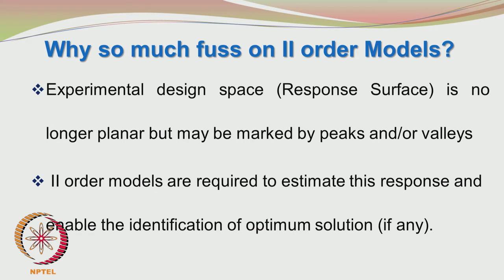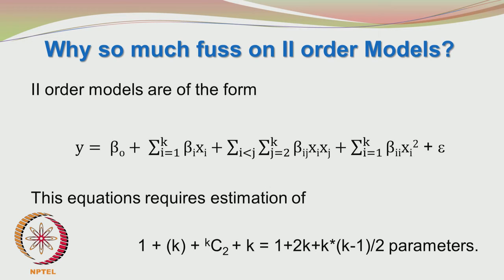Second order models receive much attention because the experimental design space may not be planar but may be characterized by peaks and valleys. Second order models are required to estimate this response and identify an optimal solution. A second order model has the form: Y equals beta0 plus the sum of beta_i·Xi (main effects) plus the sum of beta_ij·Xi·Xj (binary interactions) plus the sum of beta_ii·Xi-squared (quadratic terms) plus epsilon. This requires estimation of 1 + 2k + k(k-1)/2 parameters.